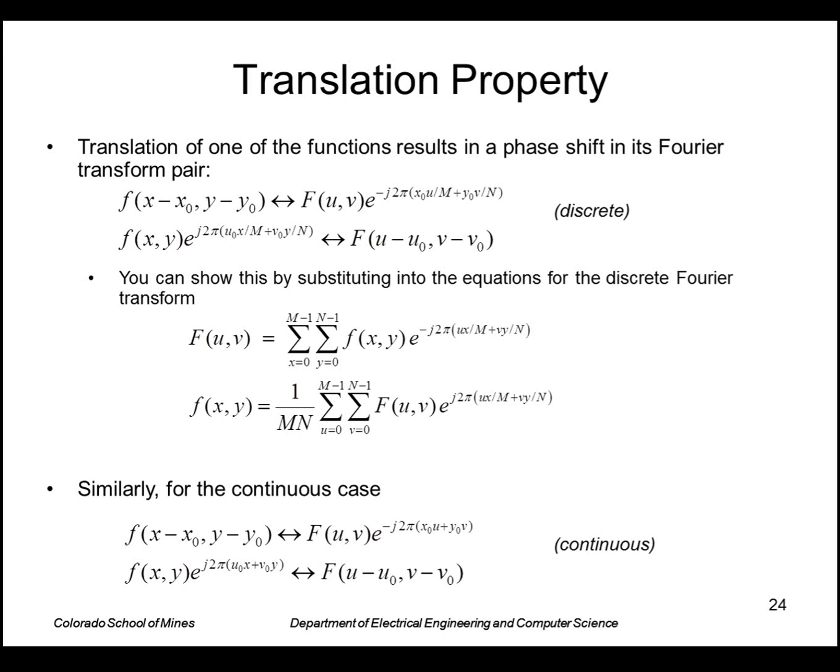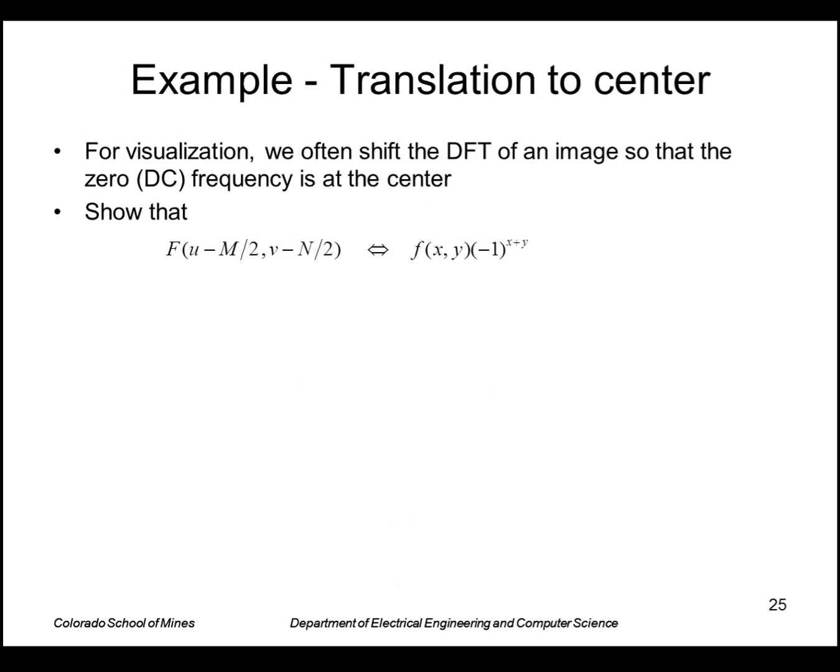For example, what we showed a little bit ago was shifting the Fourier transform of the image so that the zero frequency is at the center. So what we did was shift by a factor of M/2 in the u dimension and N/2 in the other dimension. So this new Fourier transform actually has a Fourier pair of f(x,y) where each point is multiplied by this power of -1 to the (x+y).